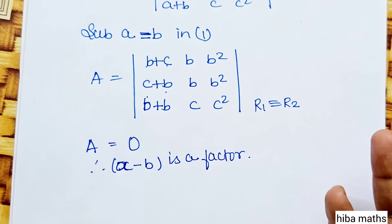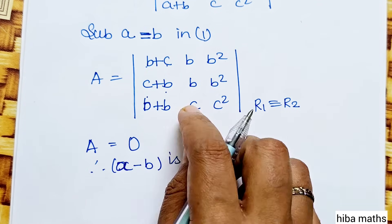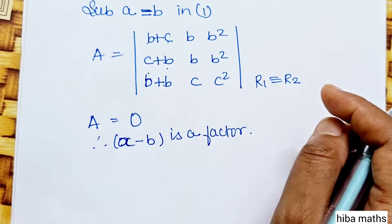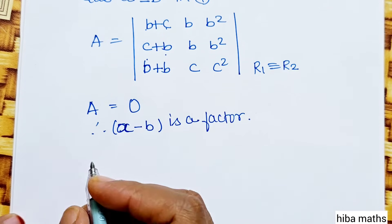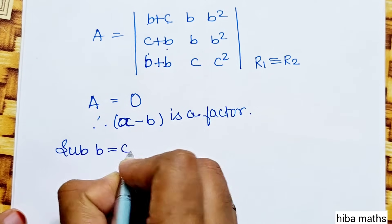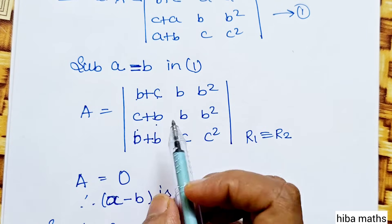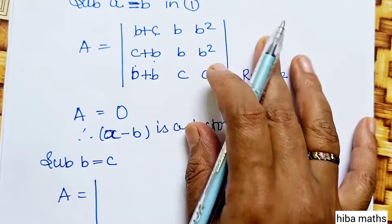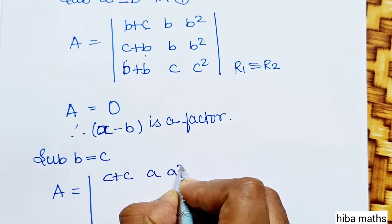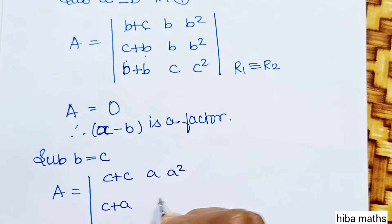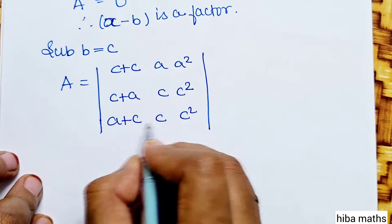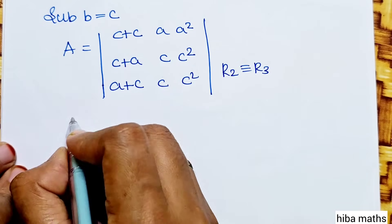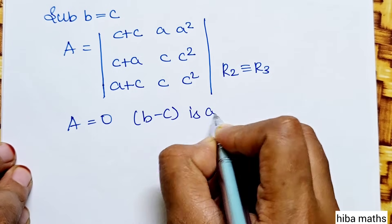Similarly, to show b minus c is a factor, substitute b equal to c. The matrix rows become: c plus c, a, a squared; a plus c, c, c squared; a plus c, c, c squared. R2 is equivalent to R3, the determinant is 0, so b minus c is a factor.